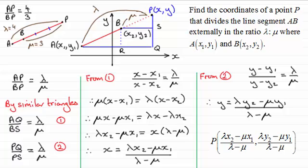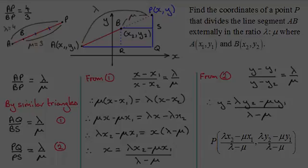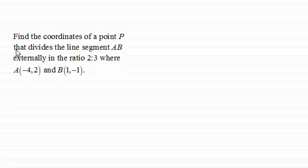Now I've got an example that I'd encourage you to have a go, which is a follow up on this, just to give you further practice. And here it is. You've got to find the coordinates then of a point P that divides the line segment AB externally in the ratio 2 to 3, where A has coordinates minus 4, 2 and B has coordinates 1, minus 1. So do pause the video and have a go at this.